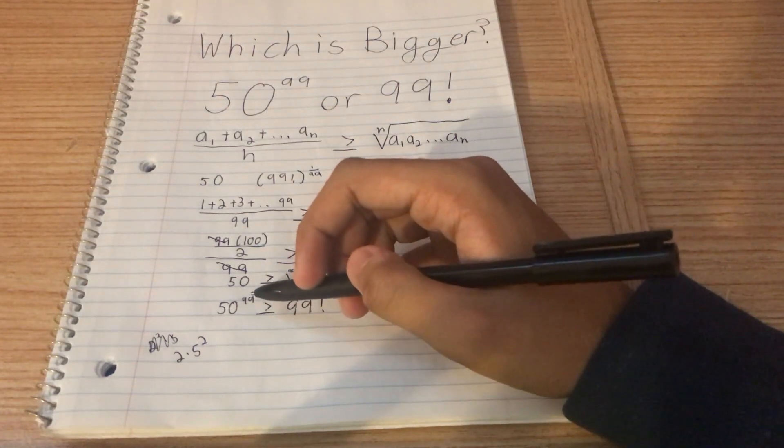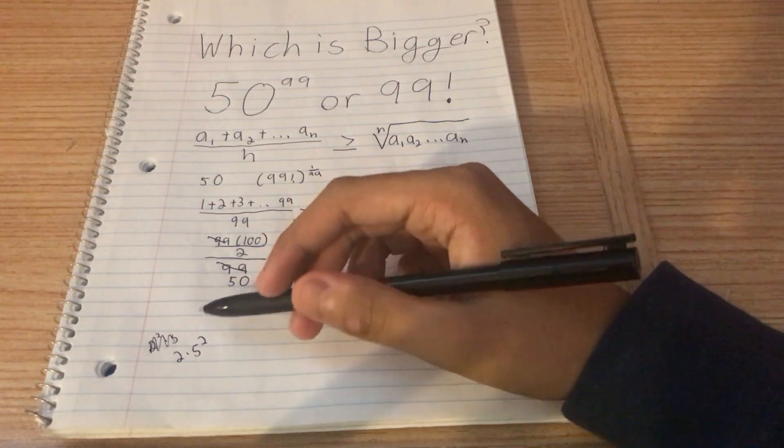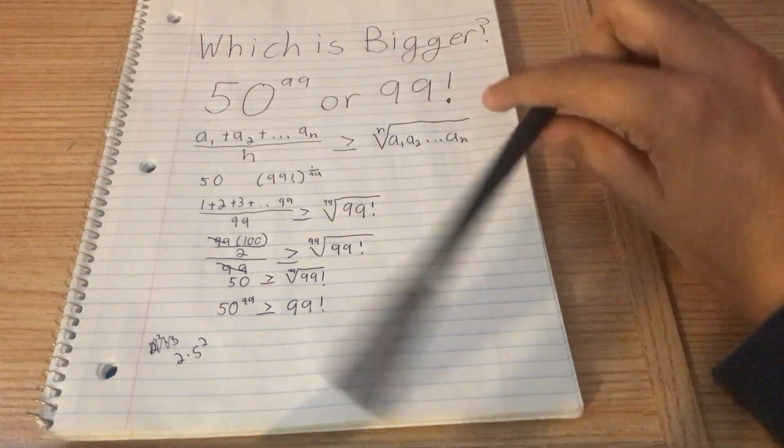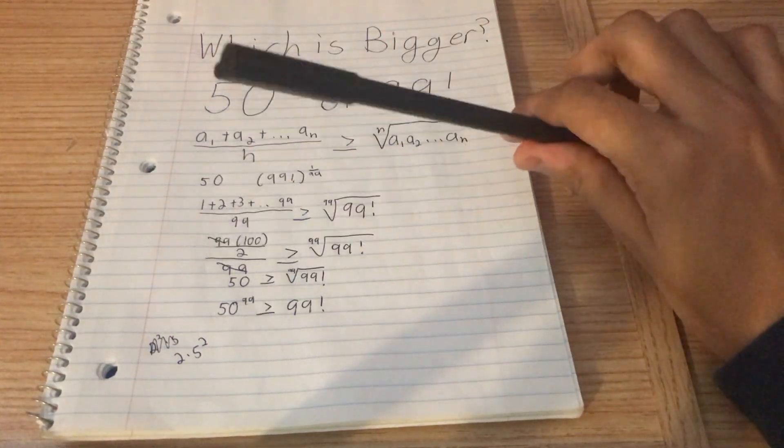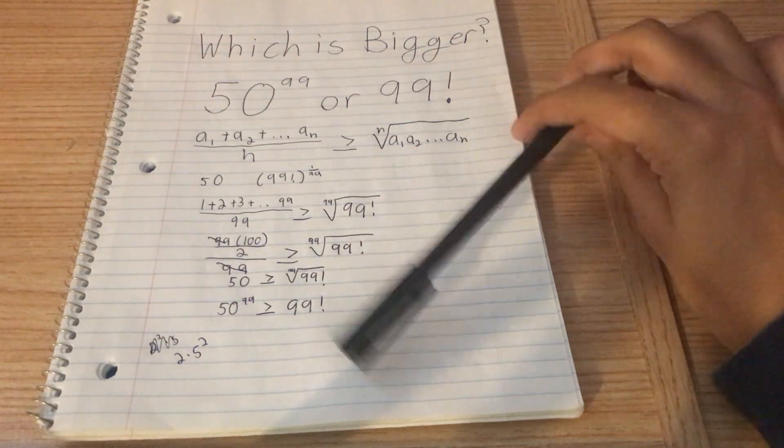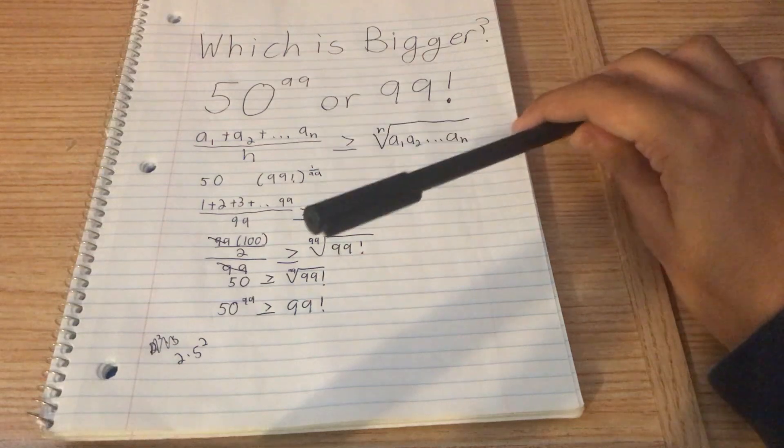So when we multiply... And then when we take the power to 99, this left-hand side will have powers of 2s and 5s. However, 99 factorial has powers of 2s, 3s, 5s, 7s, 11s, 13s, pretty much every prime up to 99 in some value.